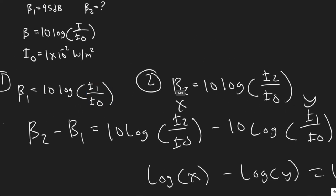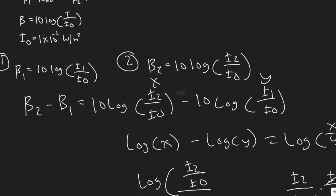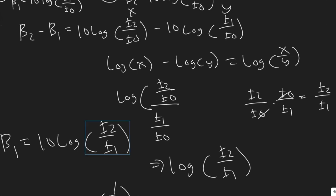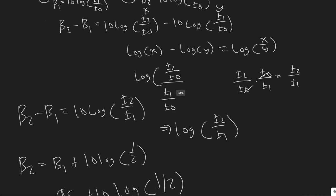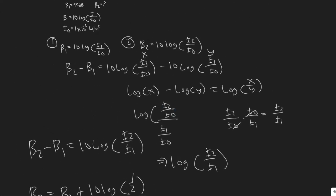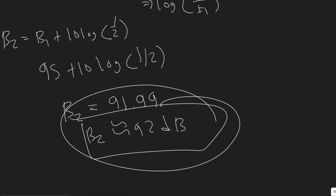Quick rundown of what we did: we created two formulas for sound level using intensity, recognized we needed the ratio of I₁ to I₂, and since there are two firecrackers versus one, the intensity is double — so the ratio is one half. Then it was just a matter of manipulating the equations and solving. Your answer is 92 decibels.